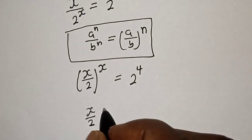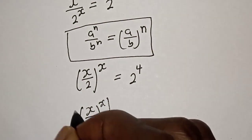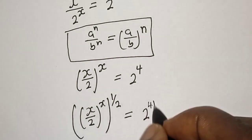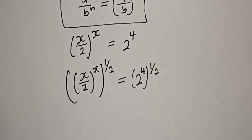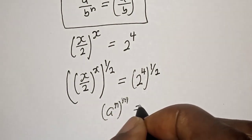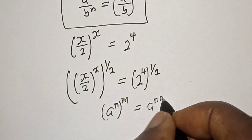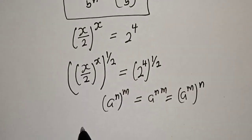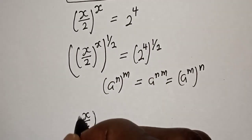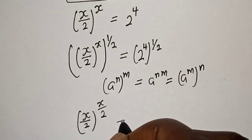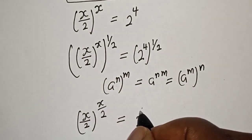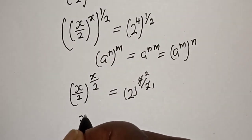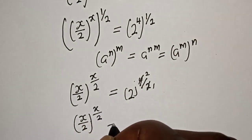So s over 2 raised to power s is equal to 2 raised to power 4. Now take note of this rule: a raised to power m to the power of m is equal to a raised to power m times m. Applying this, s over 2 to the power of s over 2, raised to the power of s over 2, is equal to 2 raised to power 4. We get s over 2 raised to power s over 2 is equal to 2 raised to power 2.